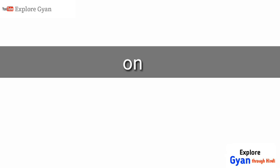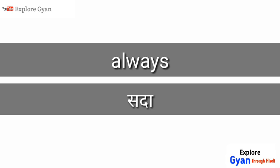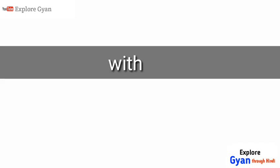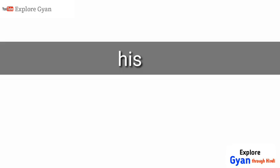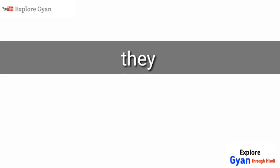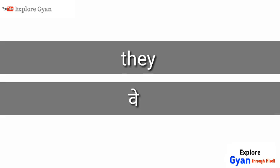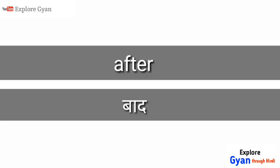'On' means par. 'Only' - kewal. 'Always' - sada. 'With' - saath. 'His' - uuske. 'They' - way. 'I' - mai. 'After' - baad.